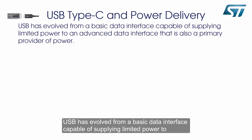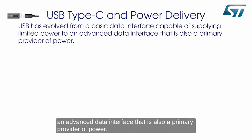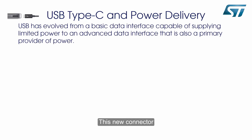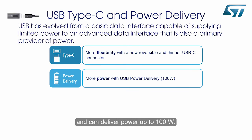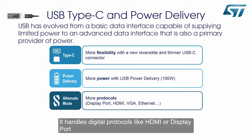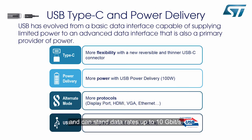USB has evolved from a basic data interface capable of supplying limited power to an advanced data interface that is also a primary provider of power. This new connector is reversible and can deliver power up to 100 watts. It handles digital protocols like HDMI or DisplayPort and can support data rates up to 10 gigabits per second.